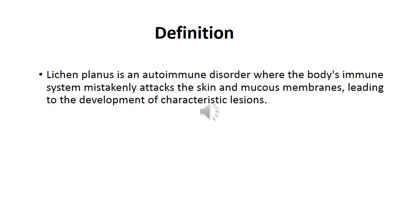Lichen planus is an autoimmune disorder where the body's immune system mistakenly attacks the skin and mucous membrane cells, leading to the development of characteristic lesions.